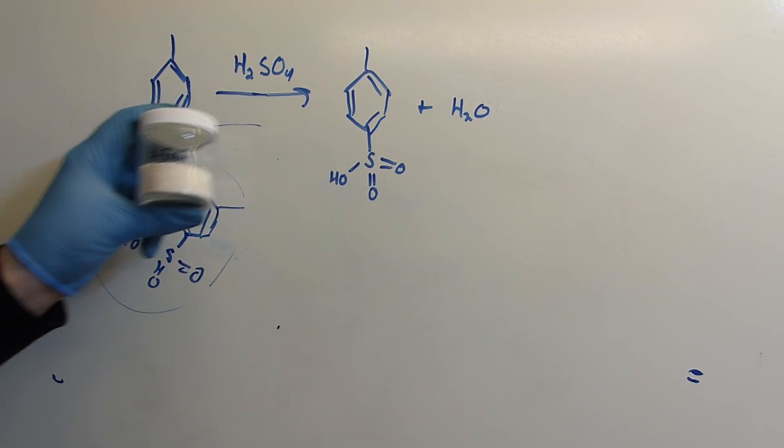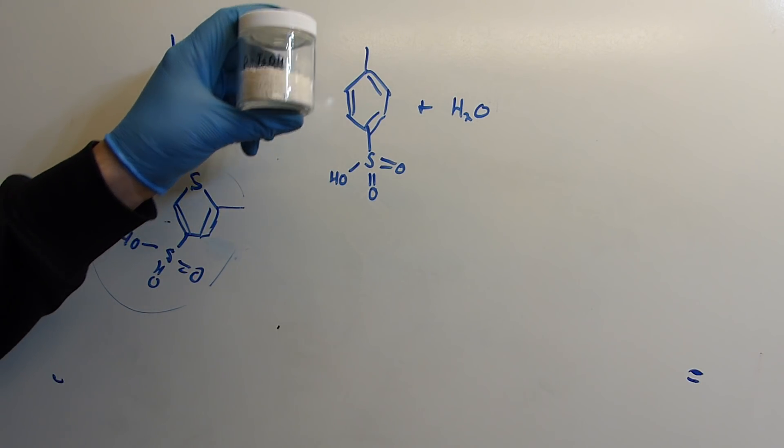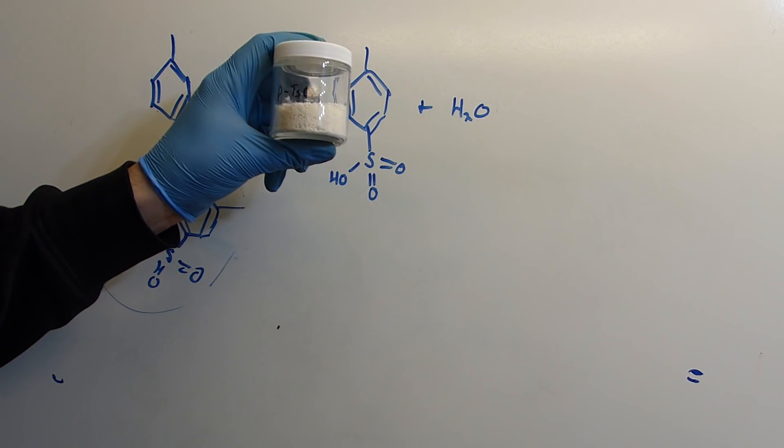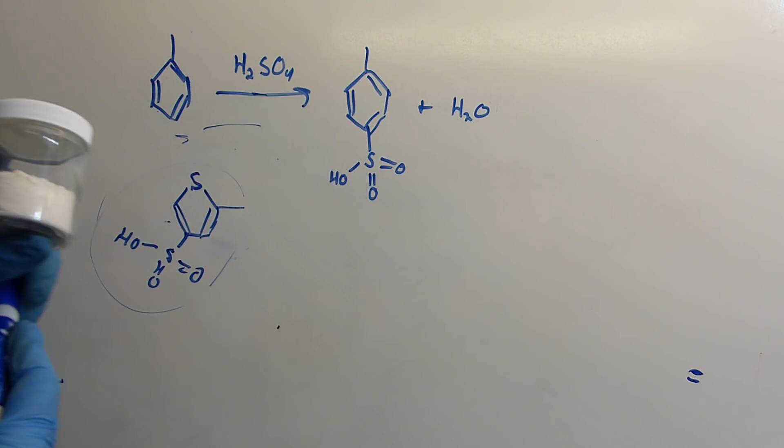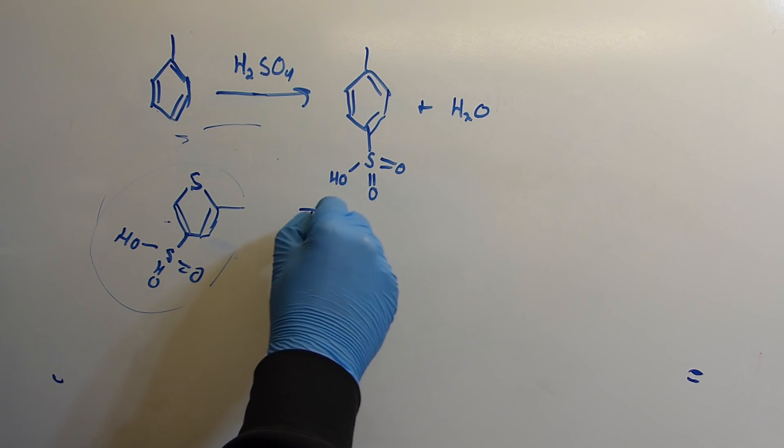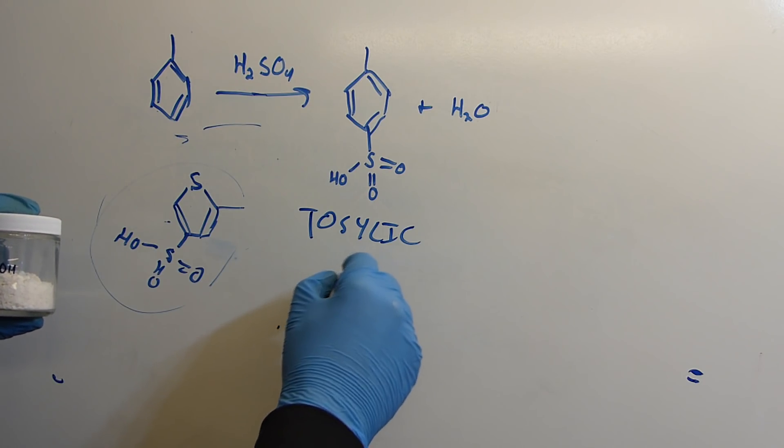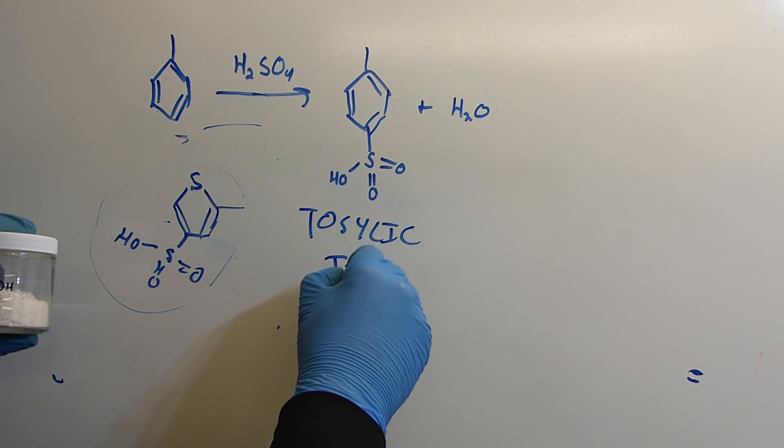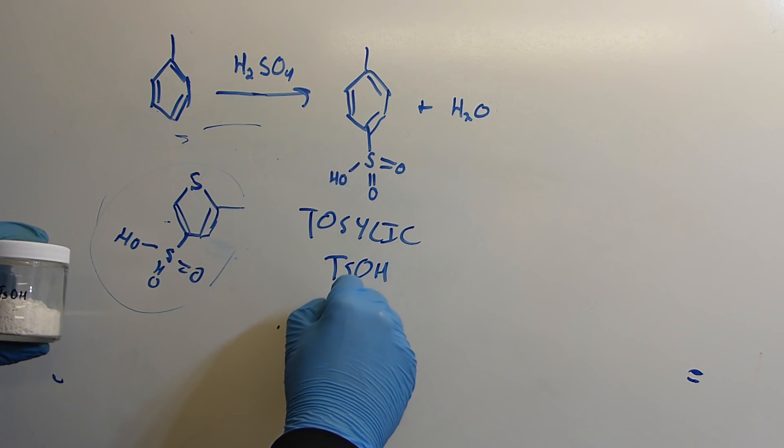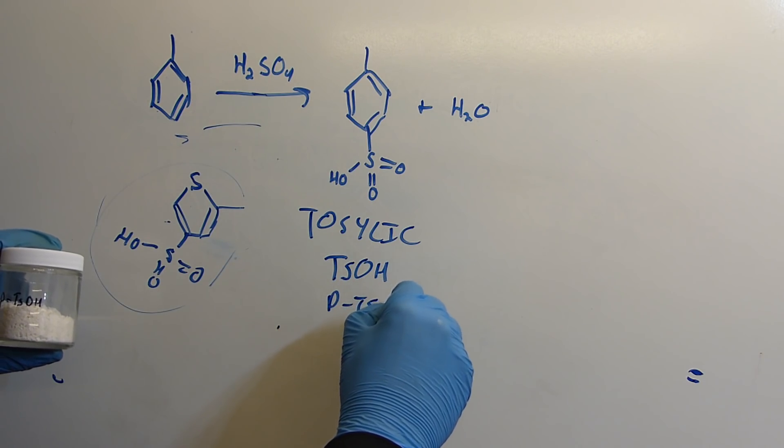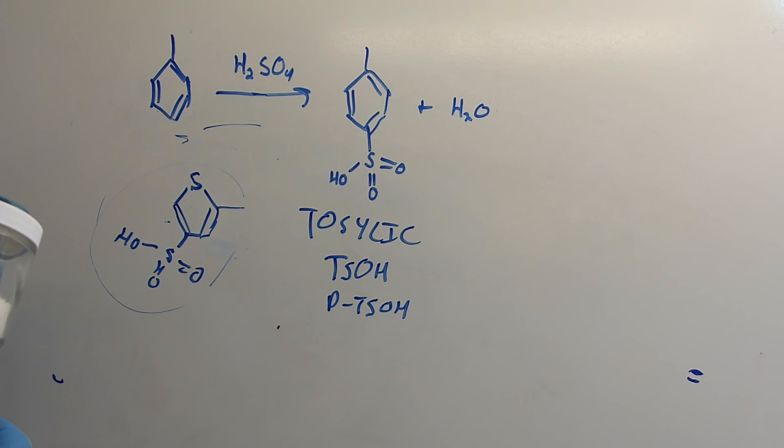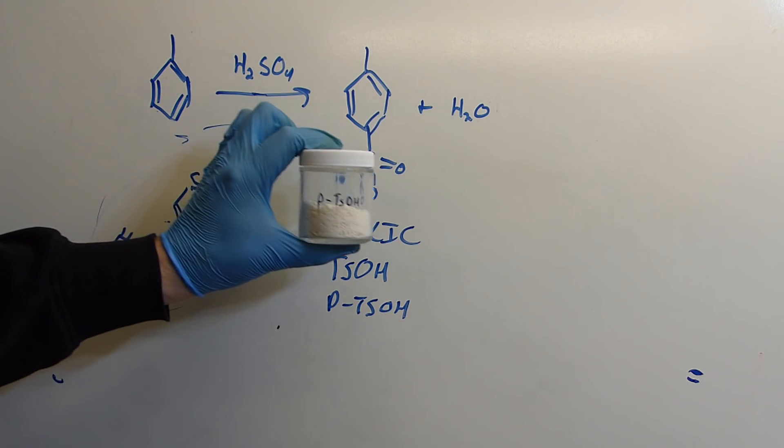This is the structure of the para-toluene sulfonic acid, also known as tosylic acid in the industry. If you ever see something that says tosylic acid, I'm going to spell that out, it's T-O-S-Y-L-I-C acid, or sometimes you'll see it abbreviated as TSOH or PTSOH, same thing. They're all referring to para-toluene sulfonic acid.